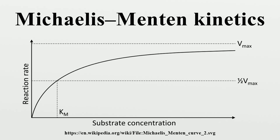Under certain assumptions, such as the enzyme concentration being much less than the substrate concentration, the rate of product formation is given by an equation where the reaction rate increases with increasing substrate concentration, asymptotically approaching its maximum rate — attained when all enzyme is bound to substrate. The turnover number is the maximum number of substrate molecules converted to product per enzyme molecule per second.